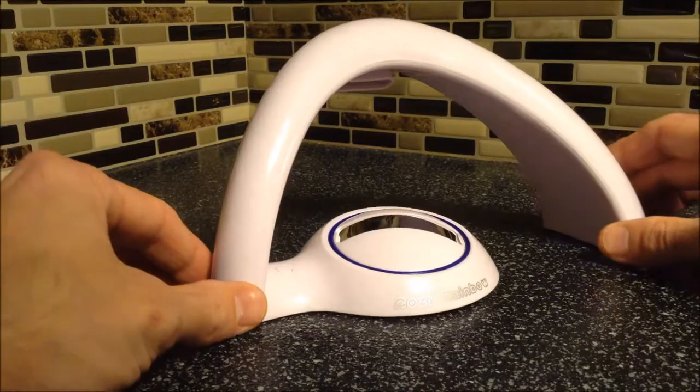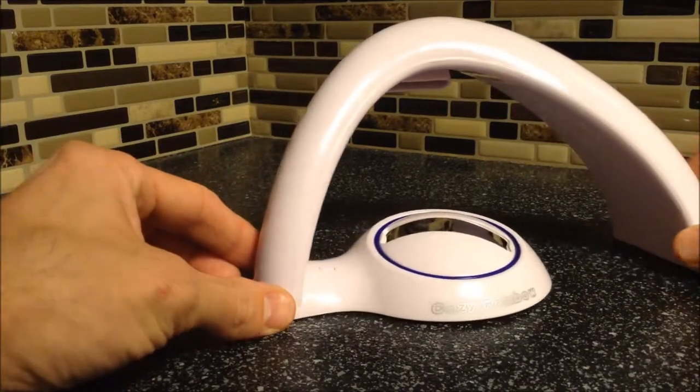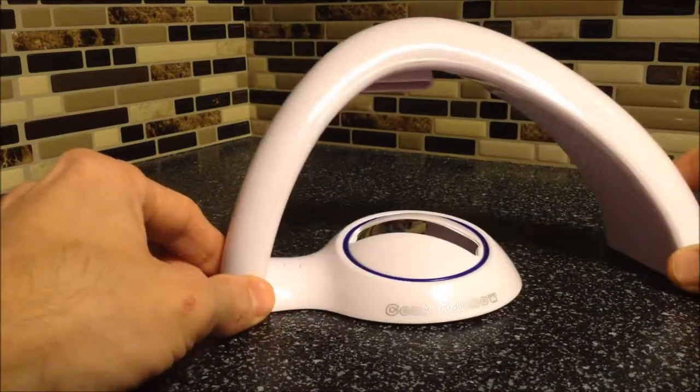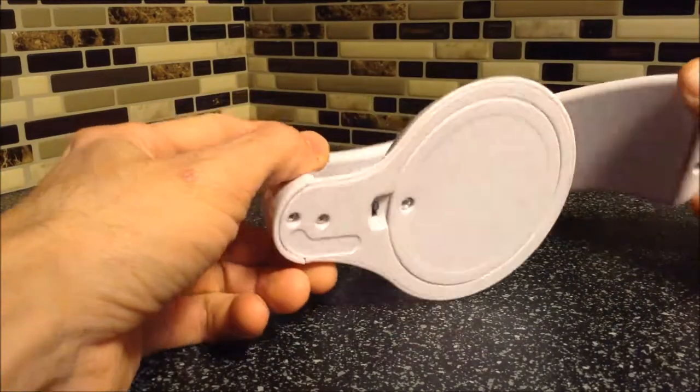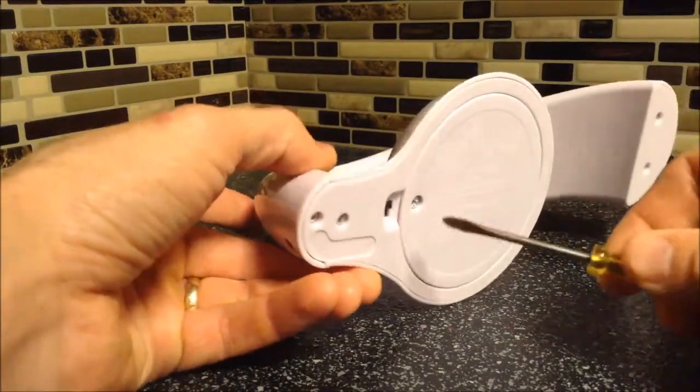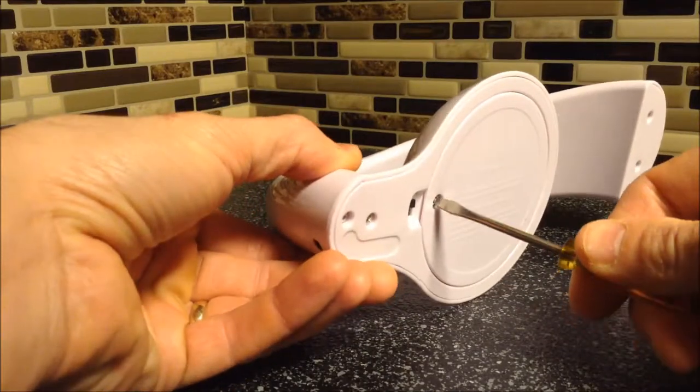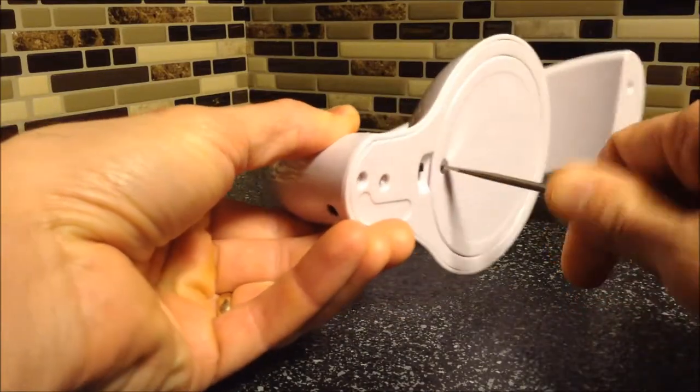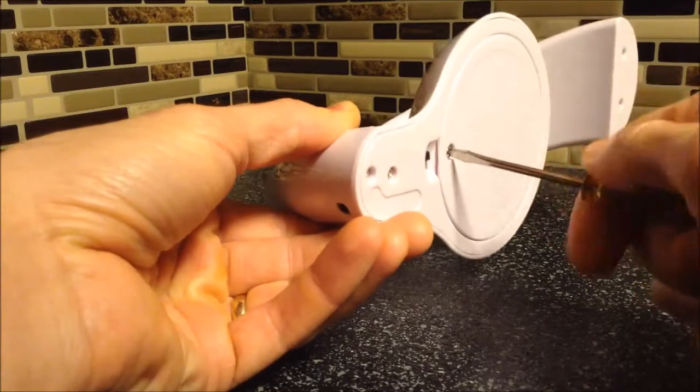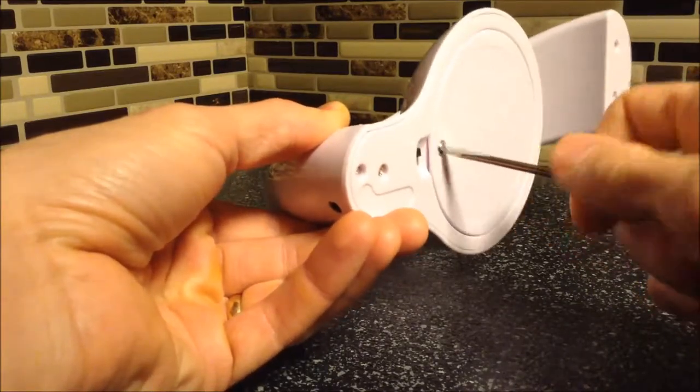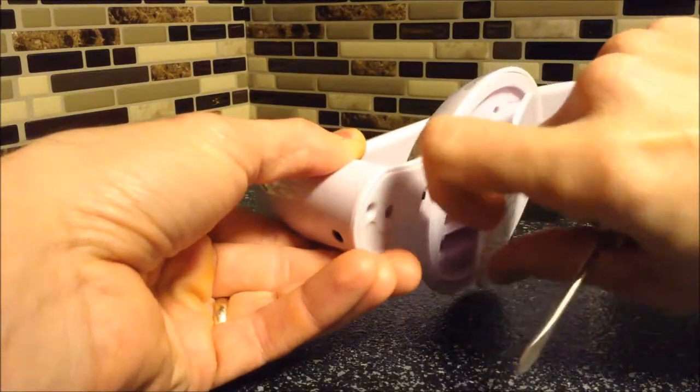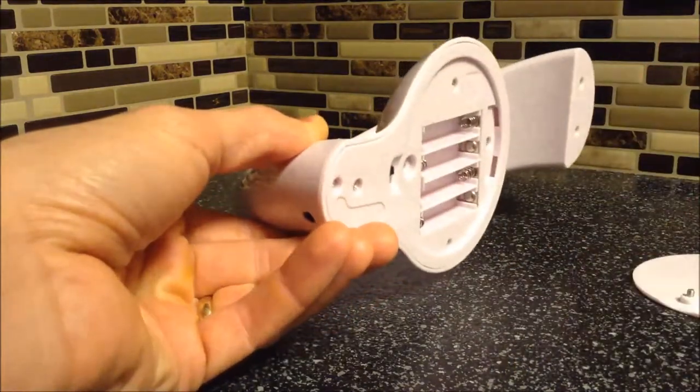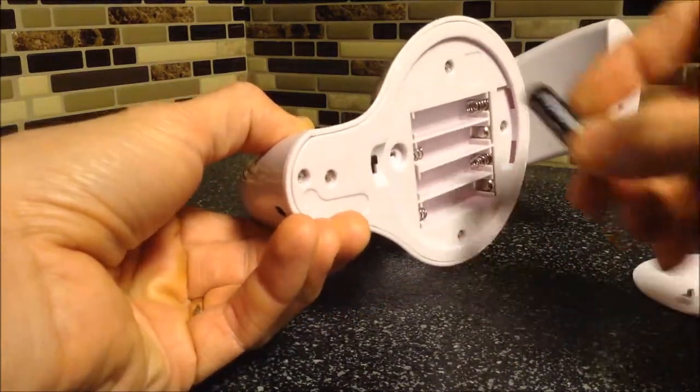So to get started, we're going to put some batteries in this thing. It does not come with batteries or an adapter. You can order them separately. So I'm just going to use the AAA batteries. What I like about this is that you need a screwdriver to get the batteries out. So if you have little ones that are around this, they're not going to be able to take the batteries out and get in trouble with them.